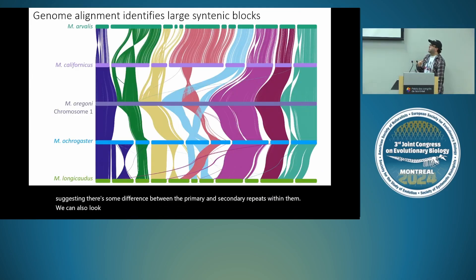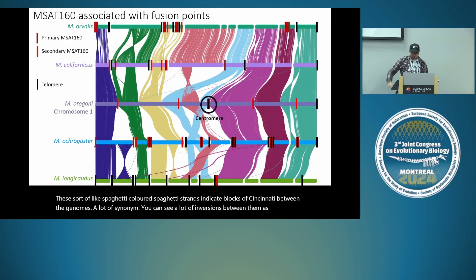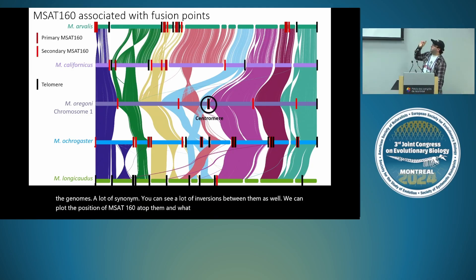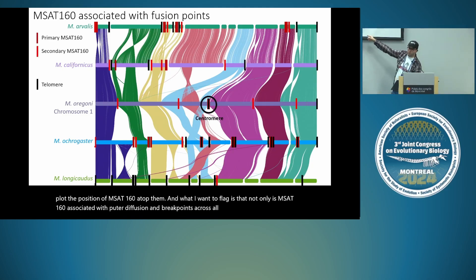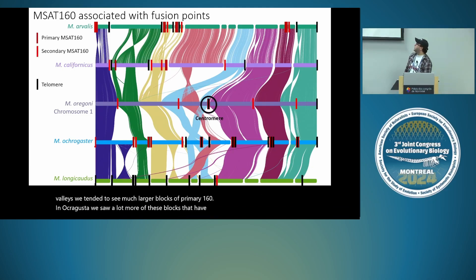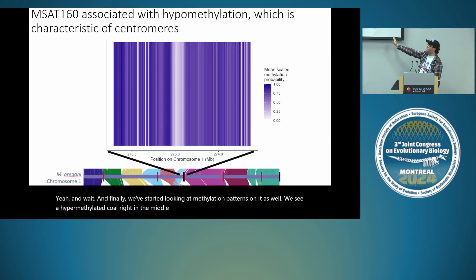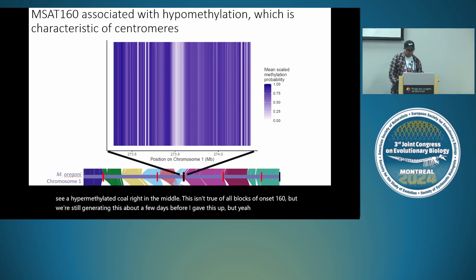We looked at gene synteny between the five species, with the creeping vole chromosome 1 in the middle, and colored spaghetti strands indicate blocks of synteny between the genomes. There are a lot of inversions visible. Plotting the position of MSAT160 atop them, MSAT160 is associated with putative fusion and breakpoints across all genomes except longicaudus, and the structure of it varies between species. In arvalis we tend to see much larger blocks of primary MSAT160; in ochrogaster, we see more blocks with interstitial telomeres. We also see a hypermethylated core at the centromere, providing good evidence that MSAT160 is a centromeric sequence.